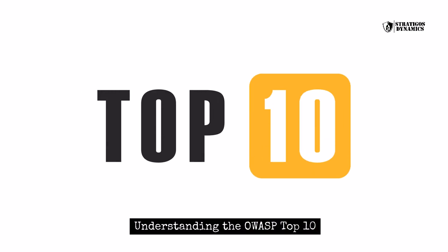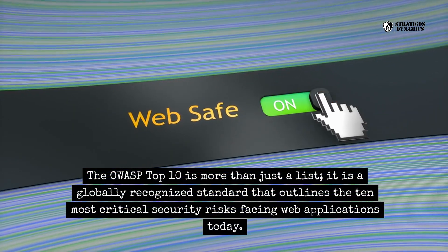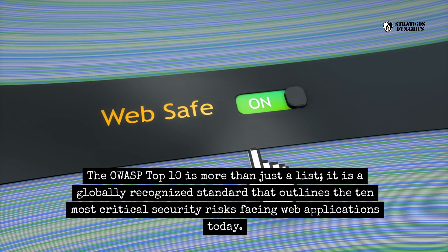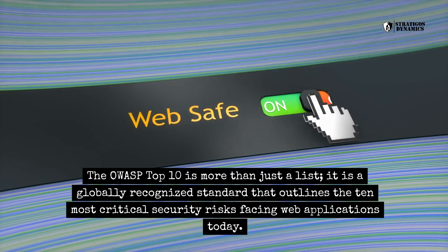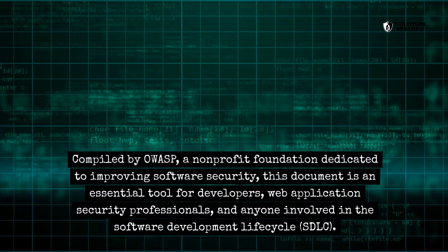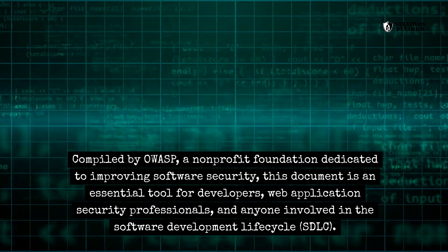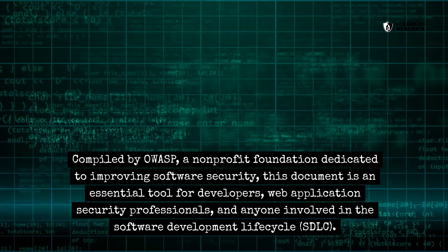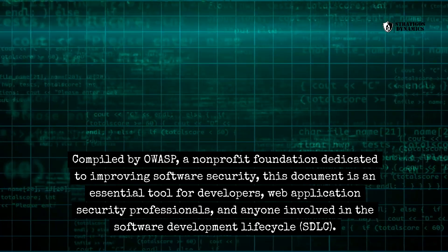The OWASP Top 10 is more than just a list. It is a globally recognized standard that outlines the 10 most critical security risks facing web applications today. Compiled by OWASP, a non-profit foundation dedicated to improving software security, this document is an essential tool for developers, web application security professionals, and anyone involved in the software development lifecycle.